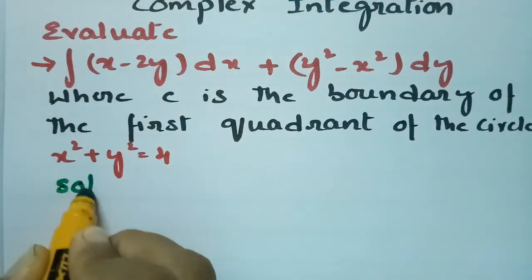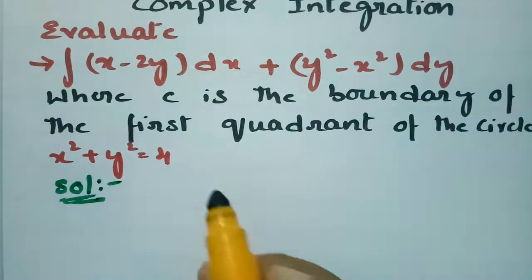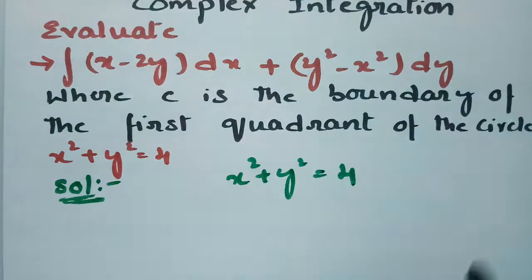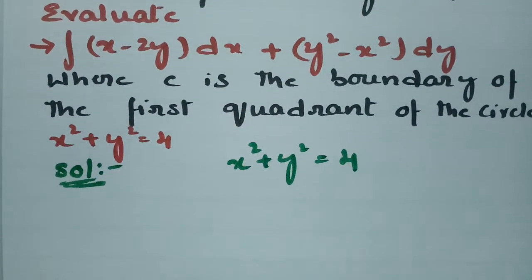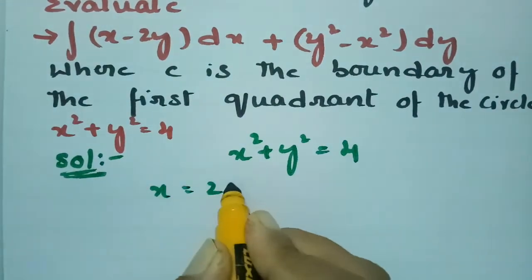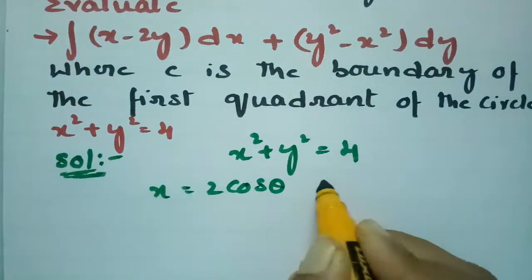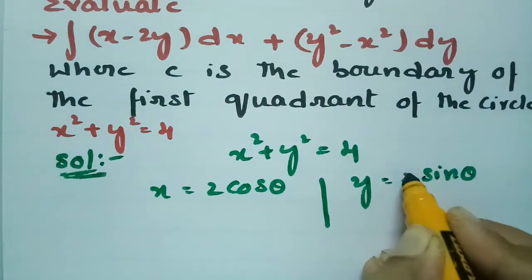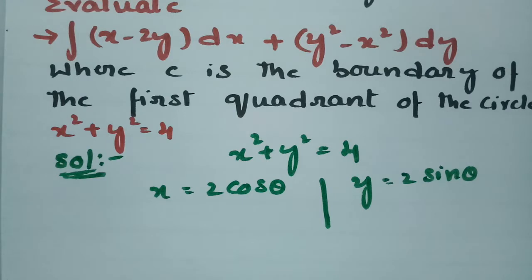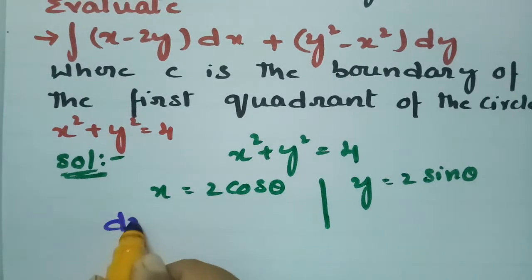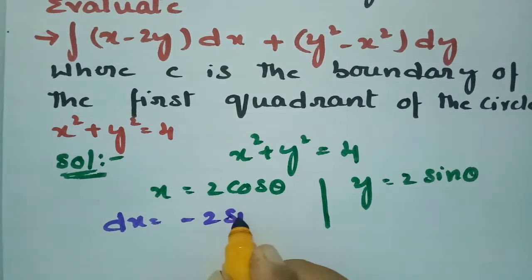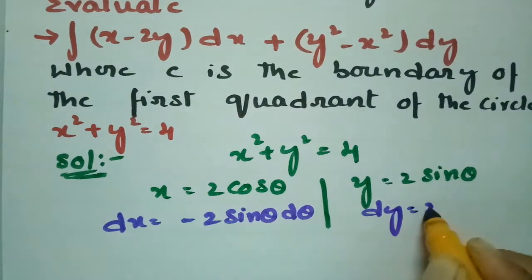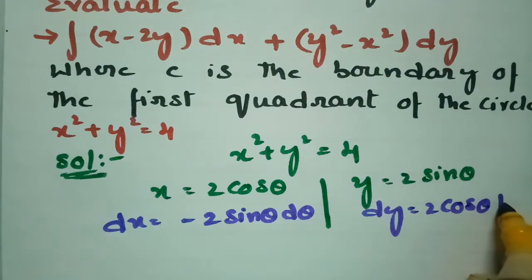In the solution, what is given is a circle equation in the first quadrant: x squared plus y squared equals 4. The parametric equations of the circle can be written as x equals 2 cos θ, where 2 is the radius, and y equals 2 sin θ. The derivatives are dx equals minus 2 sin θ dθ and dy equals 2 cos θ dθ.